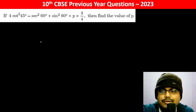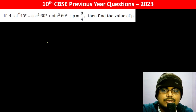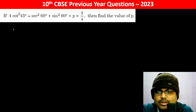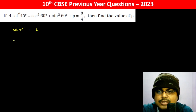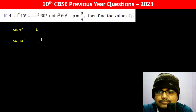If 4·cot²(45°) - sec²(60°) + sin²(60°) + p equals... cot(45°) is 1. sec(60°) is 1 divided by cos(60°), which is 1 divided by 1/2, so sec(60°) equals 2.